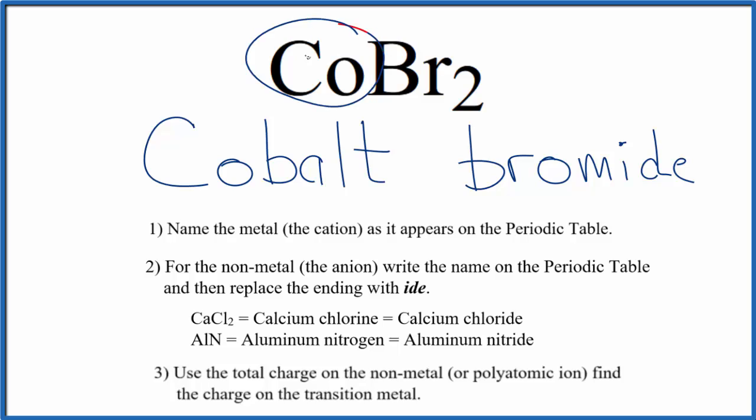But this cobalt here, it's a transition metal, so we need to write the charge in the name. We know that bromine forms ions that are 1 minus, and we have 2 of these bromine ions. 2 times 1 minus, that's 2 minus. The cobalt has to be 2 plus. So we're going to put a Roman numeral 2 in parentheses between the names.